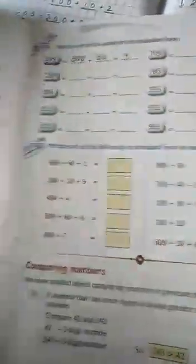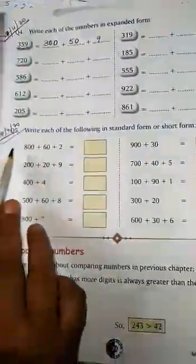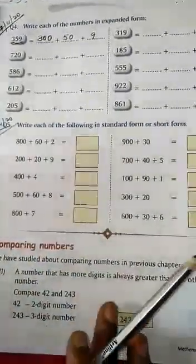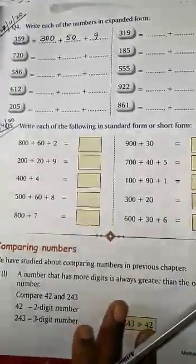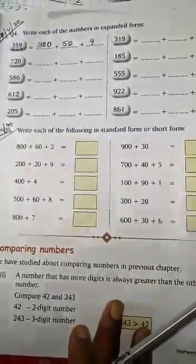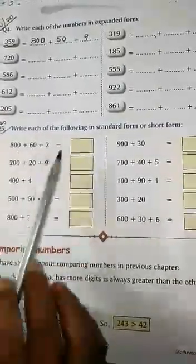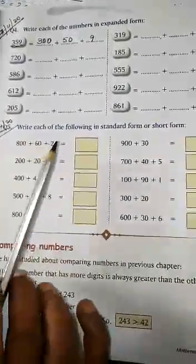Now today I will teach question number 5: Write each of the following in standard form or short form. Given in expanded form, you have to write in short form or standard form. Both are same - standard form and short form both are same. Kya करना है? यहाँ पर expand किया हुआ है और आपको short में लिखना है.